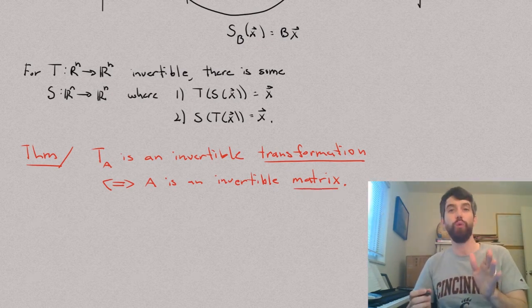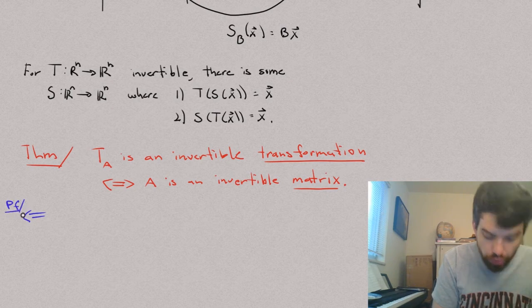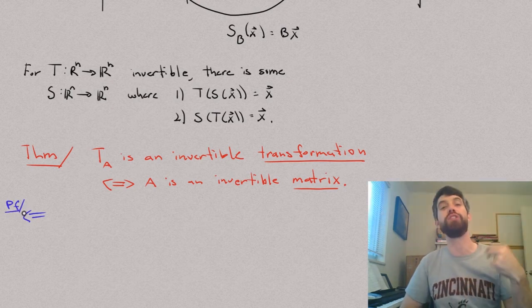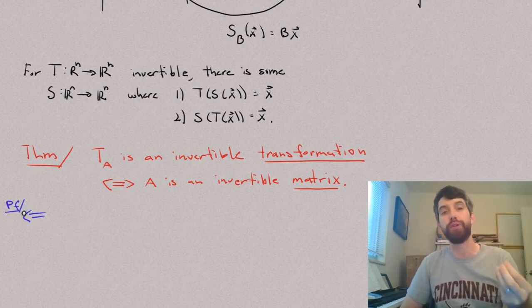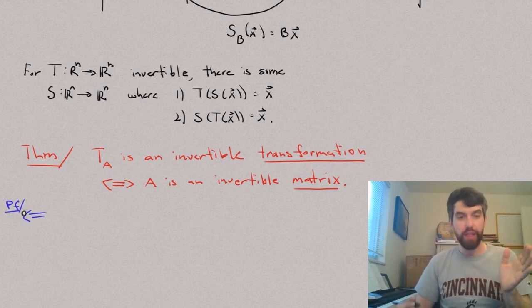So, I'm going to prove just one of the two sides for you. I'm going to prove this direction. The direction that says, let me start with it being an invertible matrix and deduce that I've got it being an invertible transformation. In other words, I'm supposing that A is invertible.